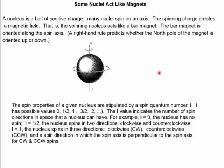An electron has a minus-one charge and is known to act like a ball of spinning charge — it spins in two possible directions, clockwise and counterclockwise. Quantum mechanically, its spin characteristics are stipulated by a spin quantum number. A spinning nucleus is similar: its spin properties are stipulated by a spin quantum number i. The value of i specifies the number of directions that a nucleus can spin. If i equals zero, the nucleus has no spin. If i equals one-half, the nucleus spins in two directions, clockwise and counterclockwise.